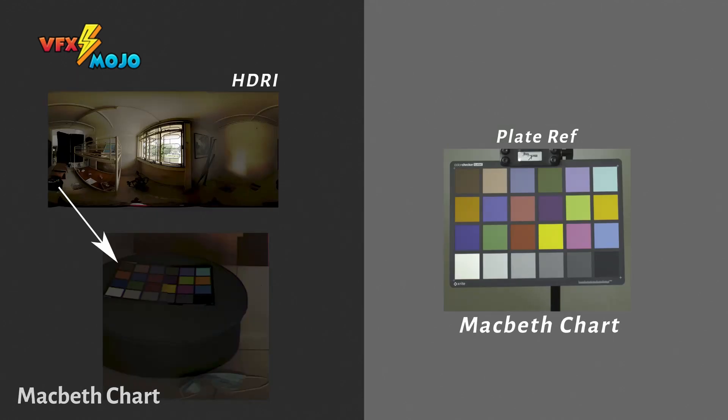The MacBeth chart captured on set is referenced so you can balance your HDRIs to your shot grades. You will want to match the white point, black point, and 18 percent gray of the HDRI to your shot to get the same lighting response from your light rig as on set.